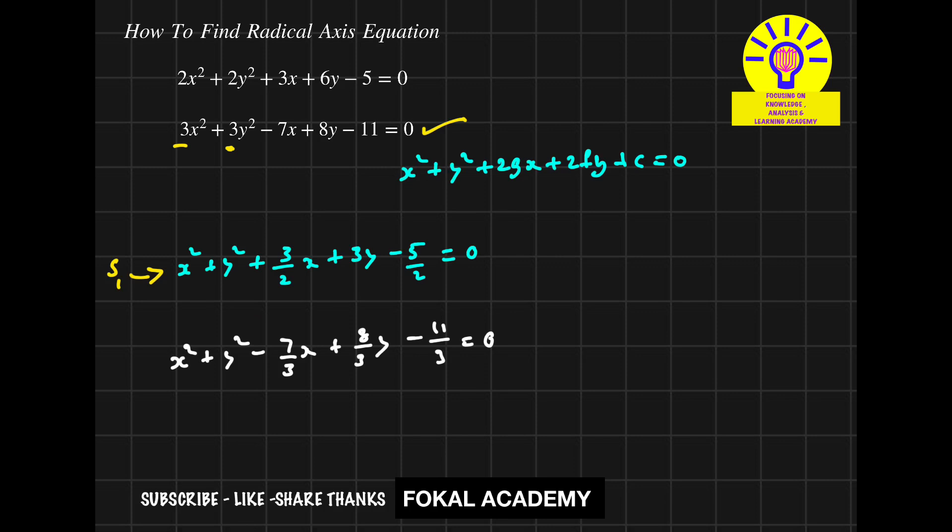Let this be equation 2, or S₂. According to the problem, we want the equation of the radical axis. The difference between the circle equations is called the radical axis equation, which is S₁ - S₂.